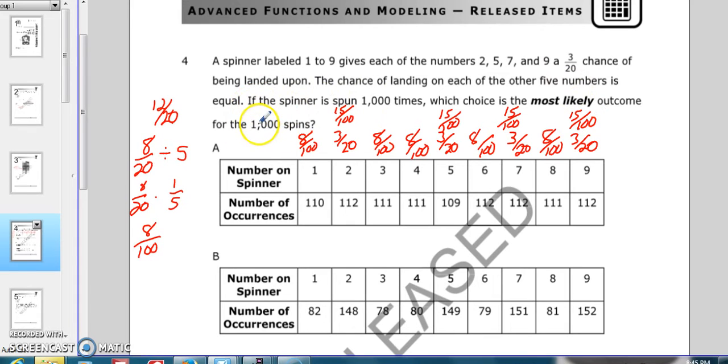Now, this is out of 1,000 spins, and I've written these out of 100. So all we need to do is multiply everything by 10. And so what we end up with is 80, and 150, and 80, 80,